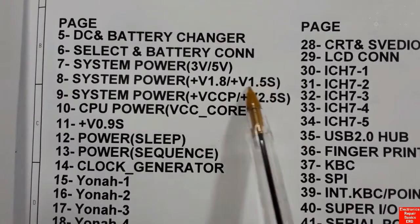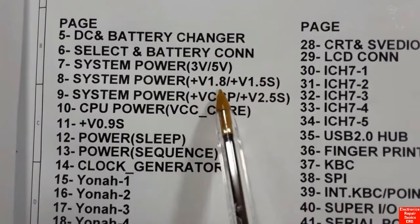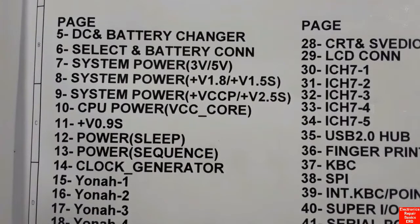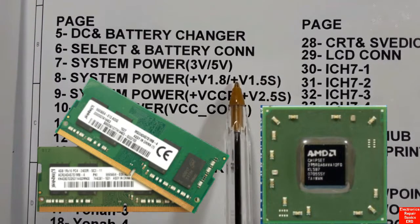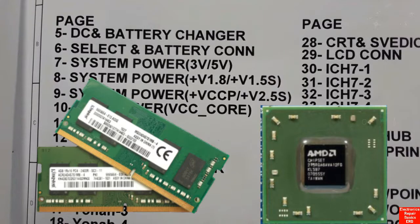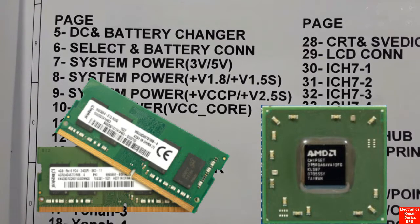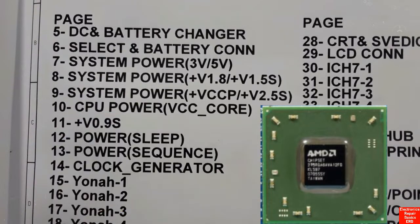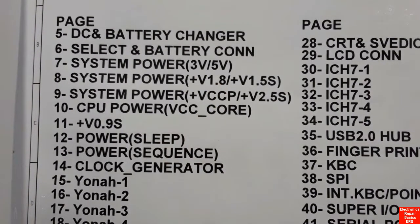This is one of the main important circuits in every motherboard. In page number eight we have the system power plus 1.8 volt and 1.5 volt. Basically these voltages are for chipsets and RAM — 1.8 volt is the working power for DDR2 RAM, and 1.5 volt is the voltage for chipsets like GMCH or north bridge and the south bridge or ICH.